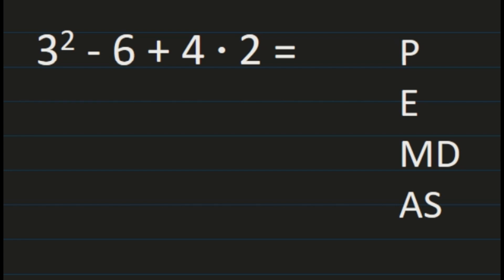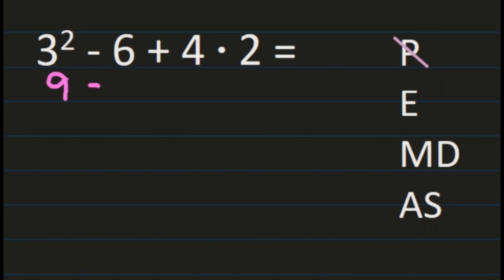In this example I have 3 squared minus 6 plus 4 times 2. I'm going to use PEMDAS to solve this problem. I'm going to start with P, which is my grouping symbols, and I don't have any grouping symbols, which means now I'm on exponents. I see that I have 3 squared, so that's what I'll need to solve first.